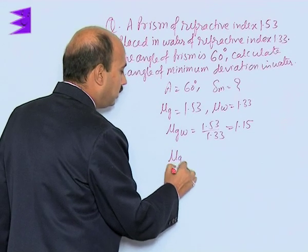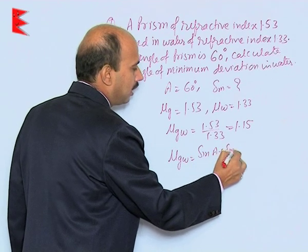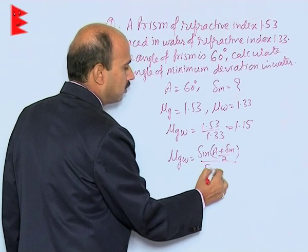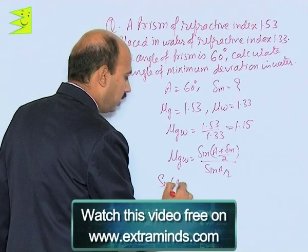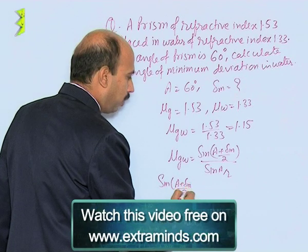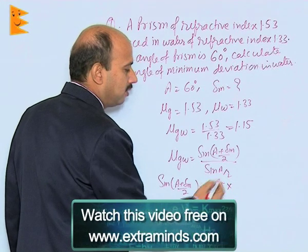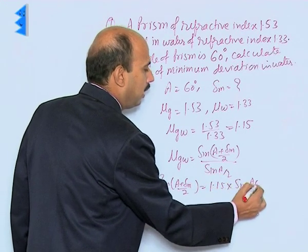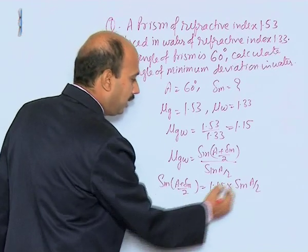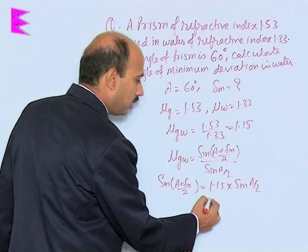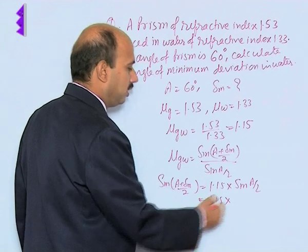We can write the formula: mu_gw = sin((A + delta_m) / 2) / sin(A / 2). So we write: sin((A + delta_m) / 2) = 1.15 × sin(A/2). Since A = 60°, sin(A/2) = sin(30°).